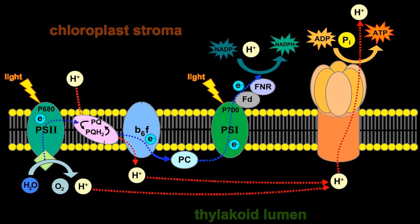This is followed by the step P680** → pheophytin, and then onto plastoquinone, which occurs within the reaction center of PS2. High energy electrons are transferred to plastoquinone before it subsequently picks up two protons to become plastoquinol. Plastoquinol is then released into the membrane as a mobile electron carrier. This is the second core process in photosynthesis. The initial stages occur within picoseconds, with an efficiency of 100%.